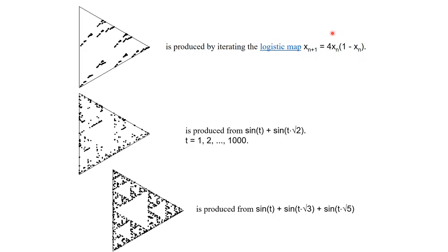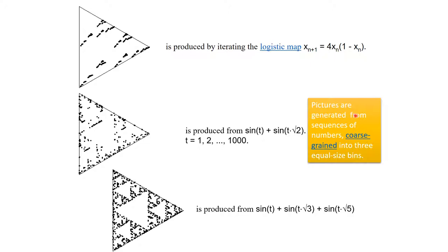Everyone must be thinking: how do we convert these equations into a sequence of three numbers? For a triangle, you only have three distinct numbers. For a chaos game, you need to move towards one of the vertices depending on which transformation is applied. The answer is that these pictures are generated from a sequence of numbers — first we generate a sequence of numbers, then coarse grain them into three equal-size bins. This process is called coarse graining the data.